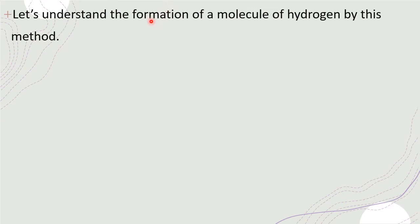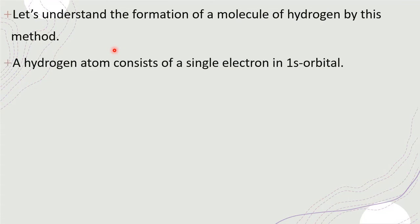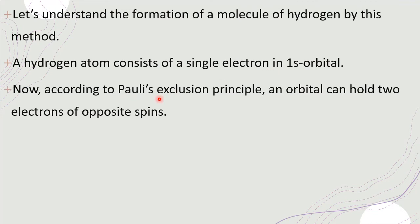Let's understand this concept by taking a small example — the simplest one, hydrogen. The formation of a molecule of hydrogen by this method: a hydrogen atom consists of a single electron in the 1s orbital. Atomic number 1, electronic configuration 1s1. According to Pauli's exclusion principle, an orbital can hold two electrons of opposite spins. So when two atomic orbitals of hydrogen come close — one with positive spin and one with negative spin — they go for overlapping, the molecular orbital is formed, and it holds two electrons strictly according to Pauli's exclusion principle.